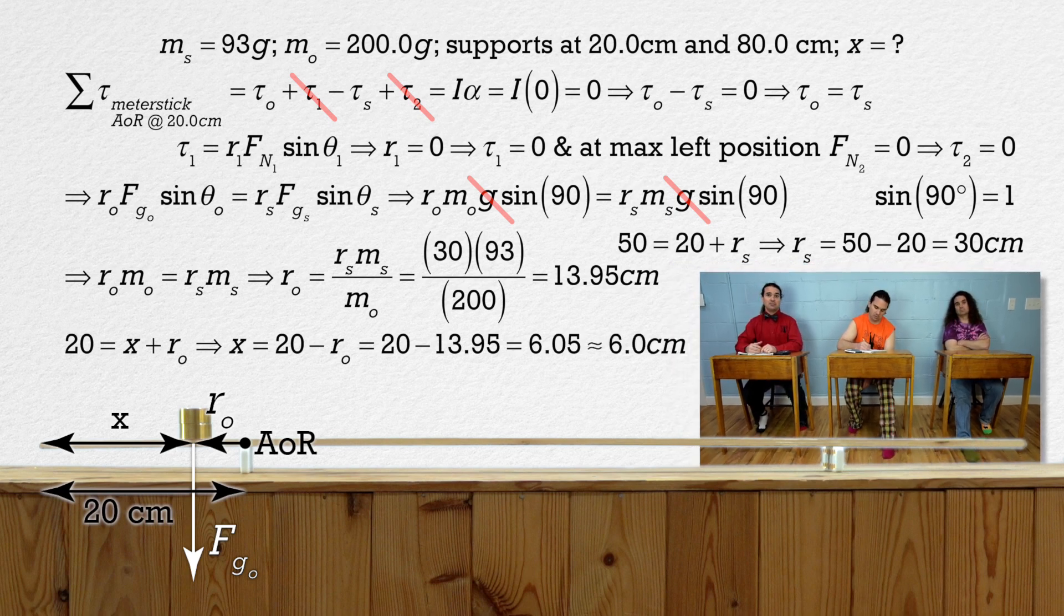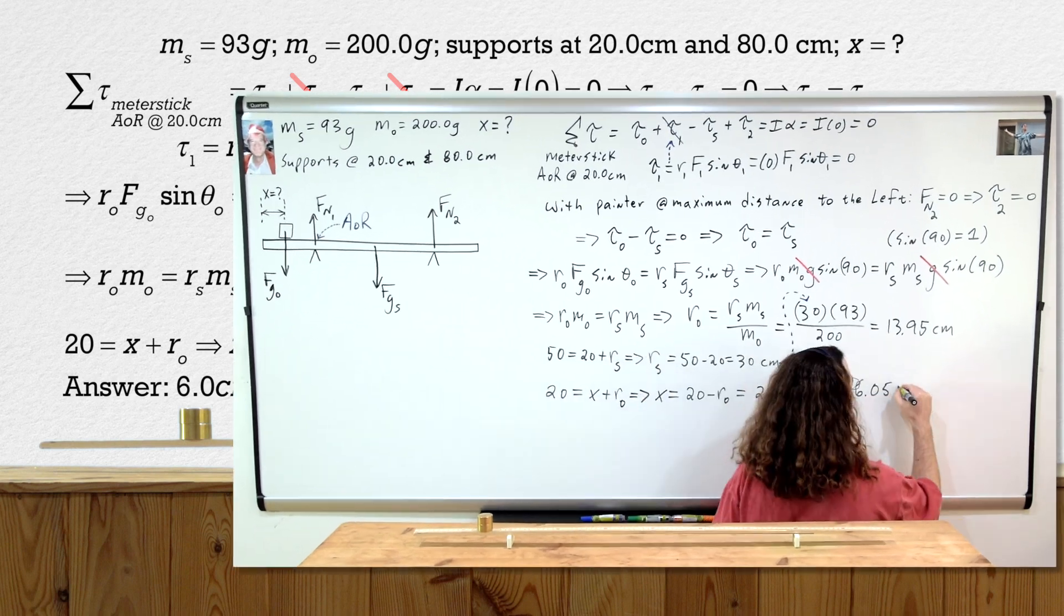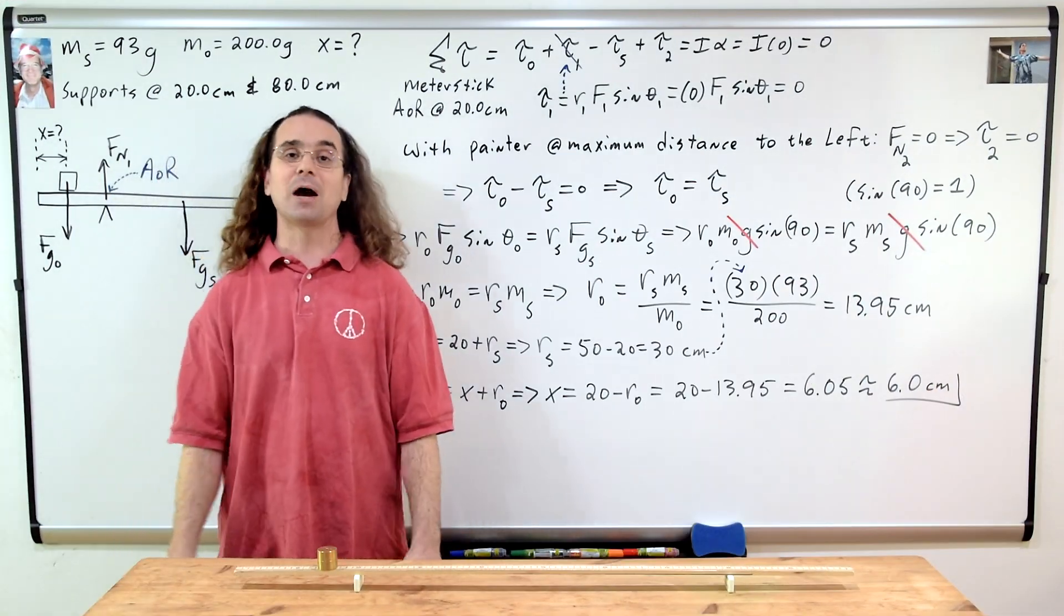Which is 6.0 with two significant digits. So, 6.0 centimeters from the end of the meter stick is how close to the end of the meter stick the object can go before the meter stick leaves rotational equilibrium and starts to angularly accelerate. And there you have it, 6.0 centimeters from the left end is our answer.